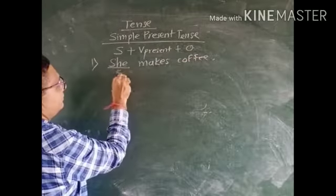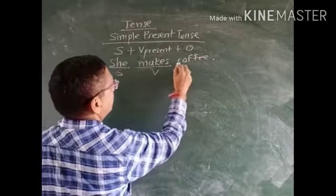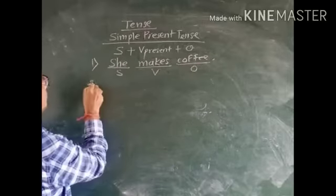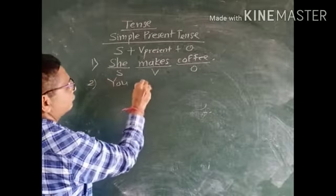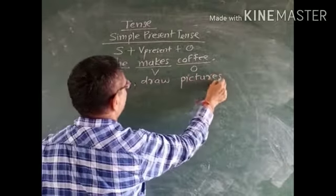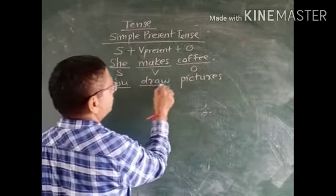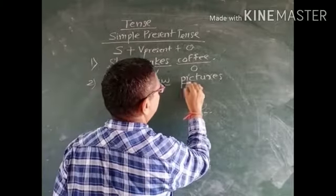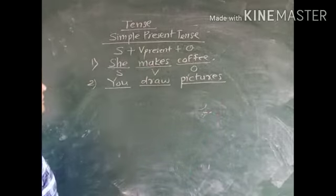Here she is subject, make is verb, and coffee is object. You draw pictures. Here you is subject, draw is verb, and picture is object.